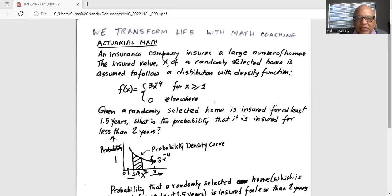Given a randomly selected home is insured for at least 1.5 years, what is the probability that it is insured for less than 2 years?